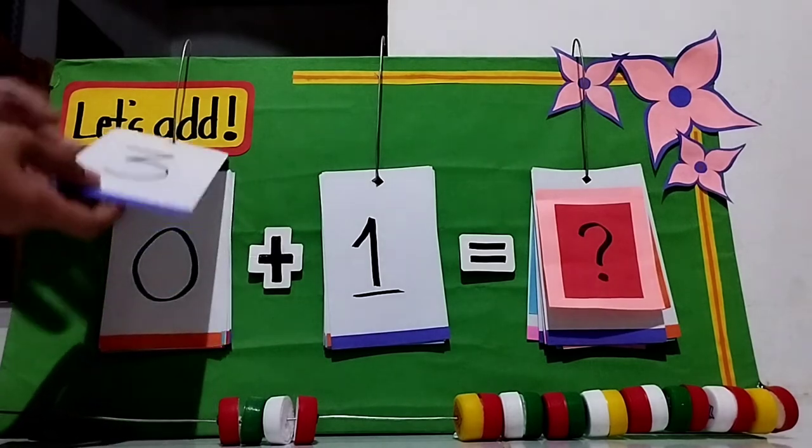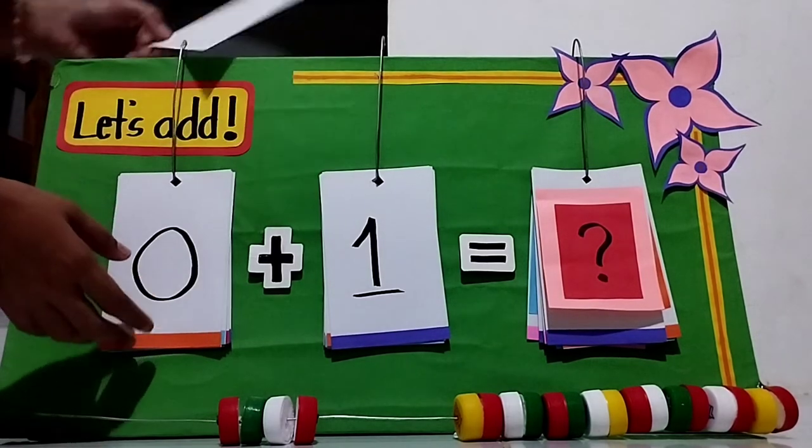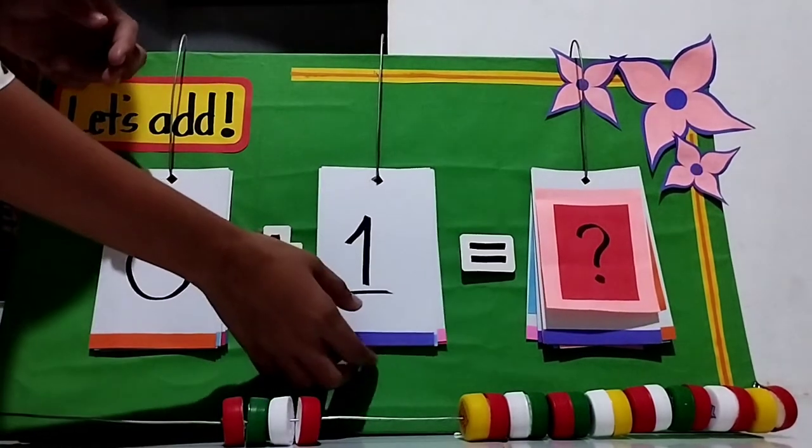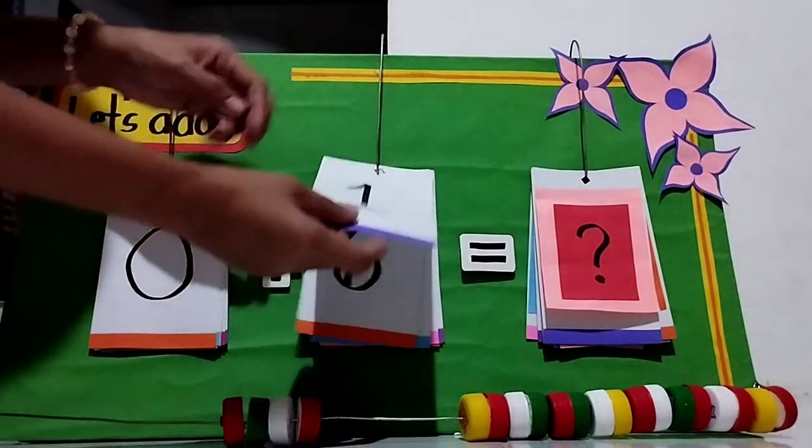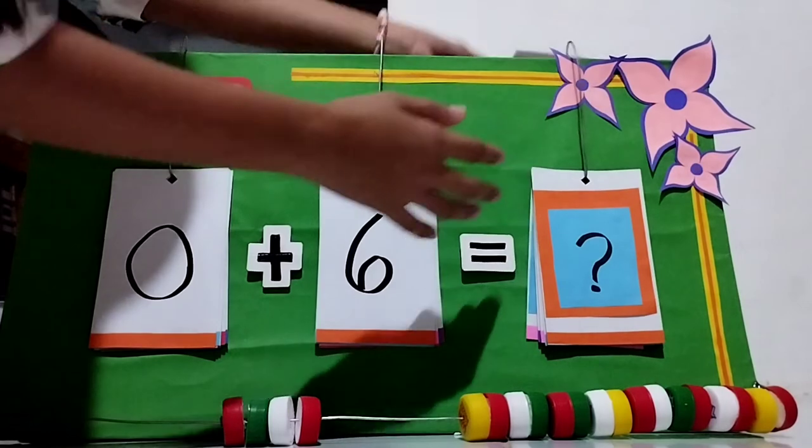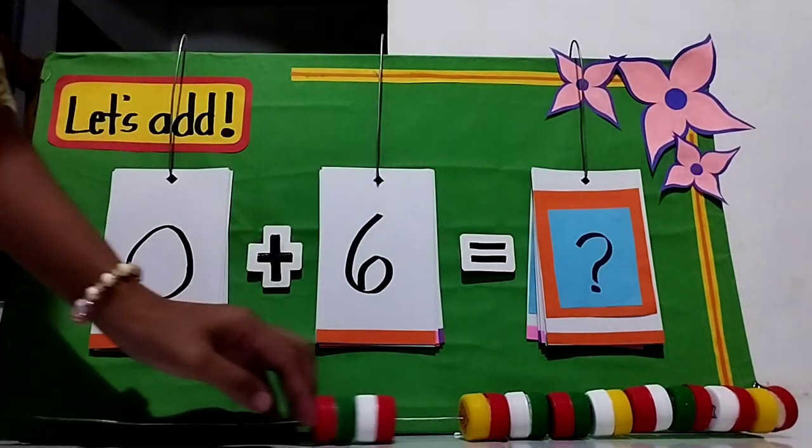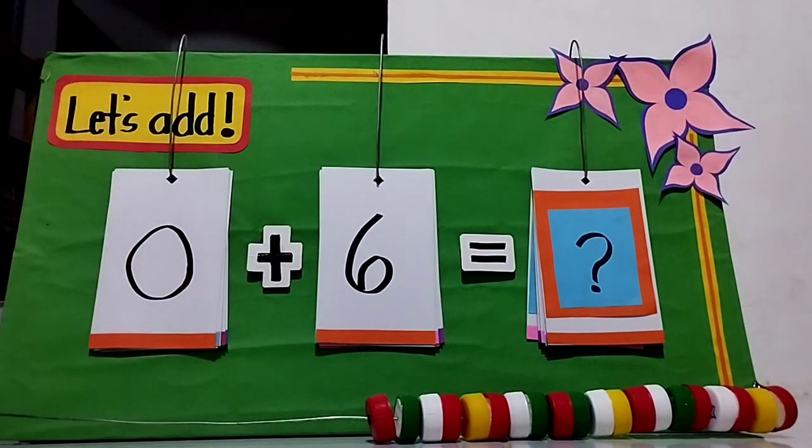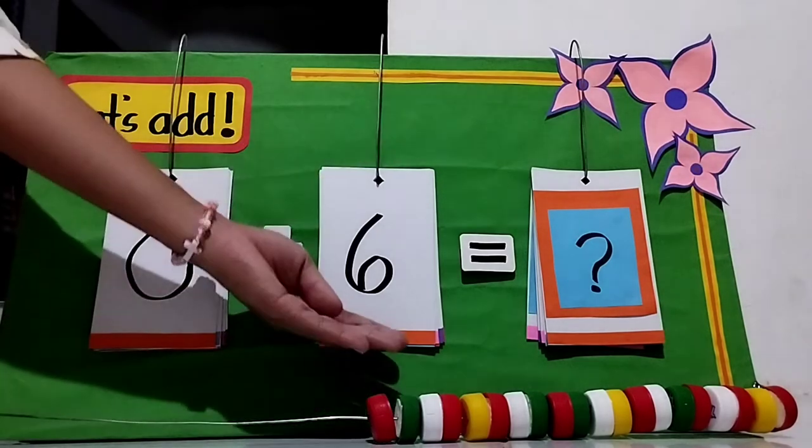Another example. In this case, the student will learn the zero property of addition, which states that for any number being added to 0, the sum remains the same.